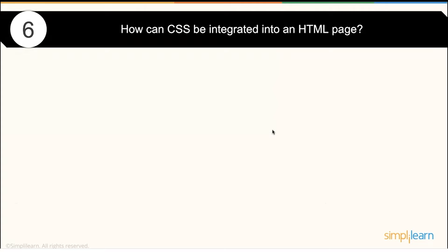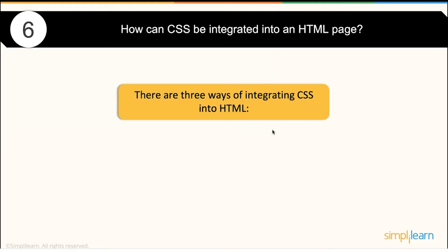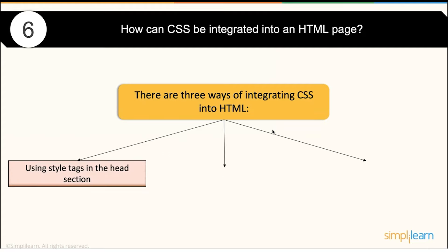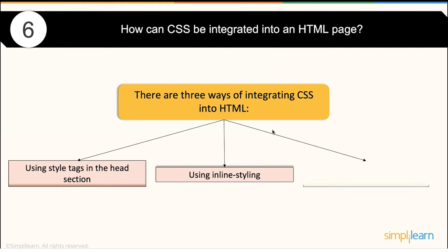How can CSS be integrated into an HTML page? Multiple options are available. First, you can use the style tag in the head section. Second, you can use inline styling within an element itself. Third, you can use an external style sheet which you link to your current HTML page — this approach enforces reusability.